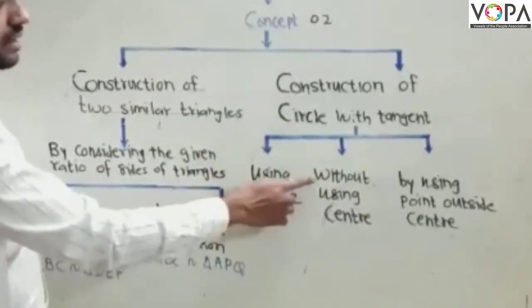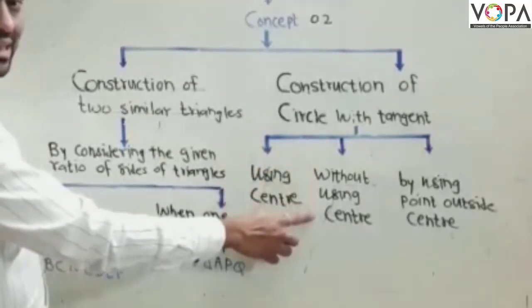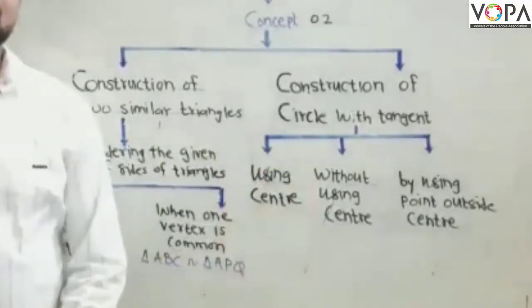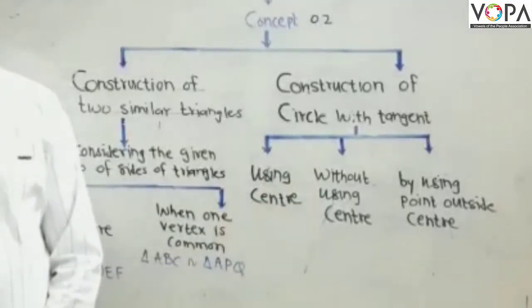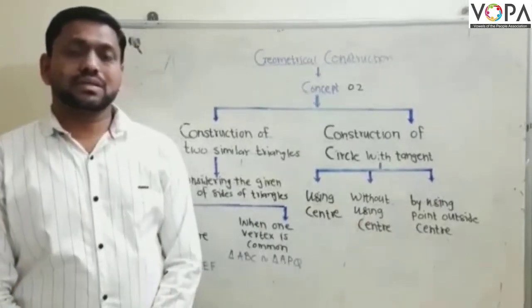In second condition, we draw the tangent of the given circle without using center. And in third condition, we draw the tangent of the given circle by taking the point outside of the center.